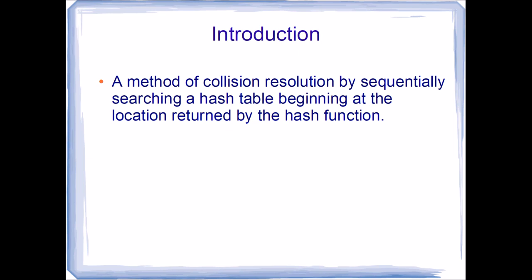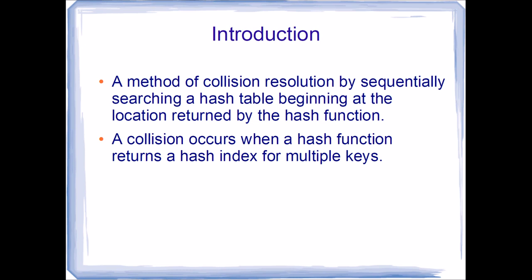Linear probing is a method of collision resolution by sequentially searching a hash table beginning at the location returned by the hash function. A collision occurs when a hash function returns a hash index for multiple keys.